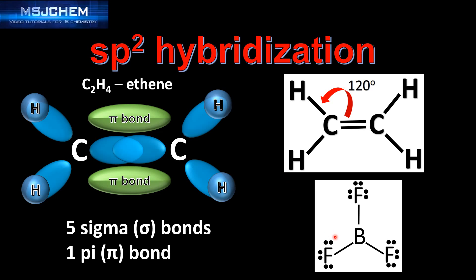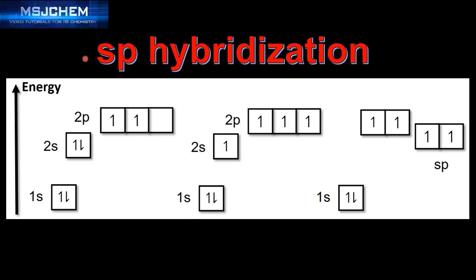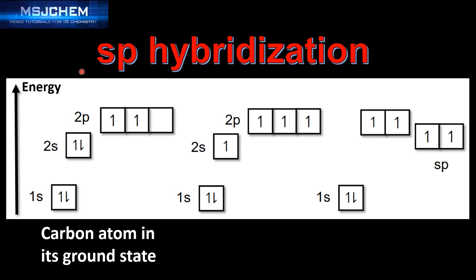SP2 hybridization in the ethene molecule results in a bond angle around the carbon atom of 120 degrees. Another example of a molecule with SP2 hybridization is boron trifluoride, which also has a bond angle of 120 degrees.